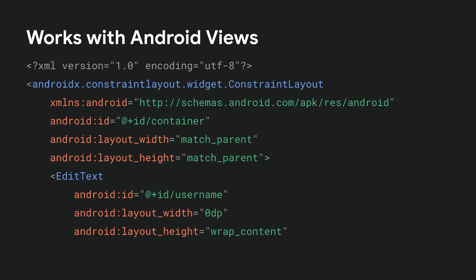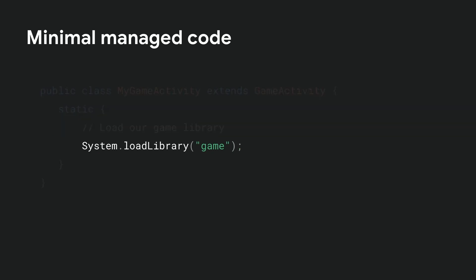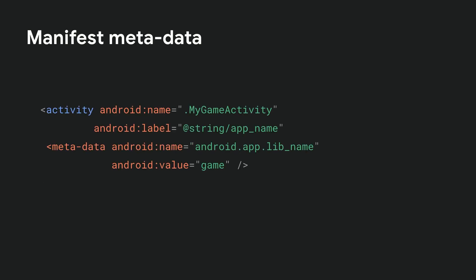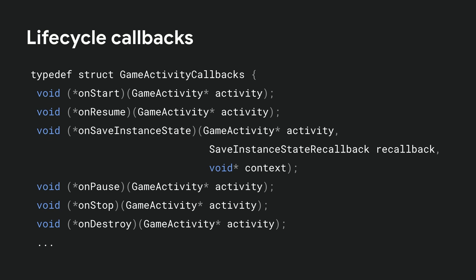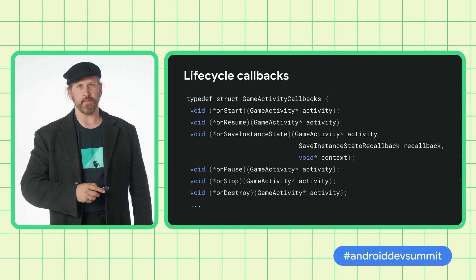Because Game Activity renders into a surface view, you can easily mix Android UI elements, such as WebView, MapView, and views required by Ad SDKs and other services. The only managed code you need to run your game loop is a single class with a line of code to load your C or C++ game library. This metadata in the activity tag in your Android manifest lets Game Activity know which library to start your game loop from. Game Activity gives you native callbacks that match Android lifecycle events, but make it easier to integrate with a typical game loop.